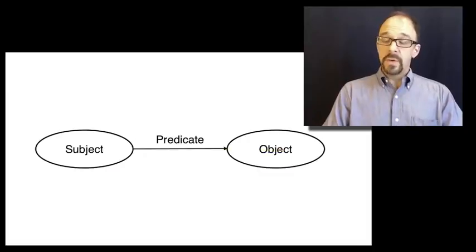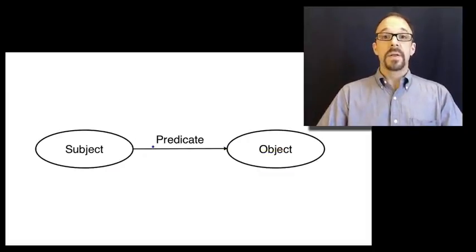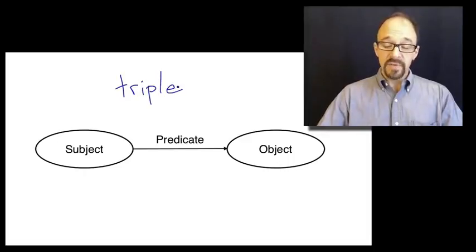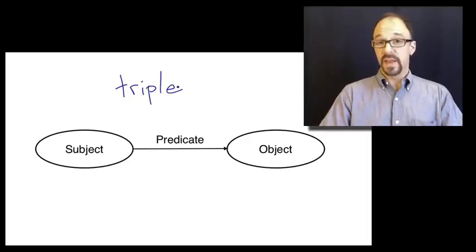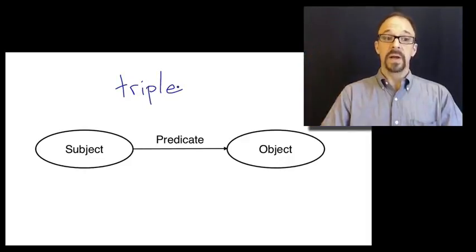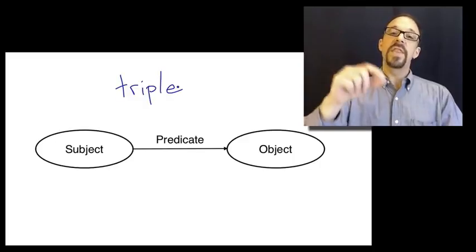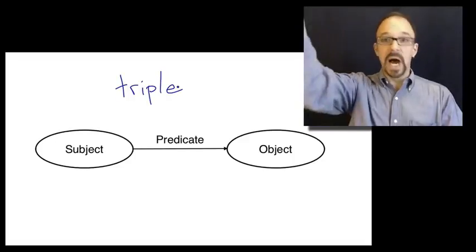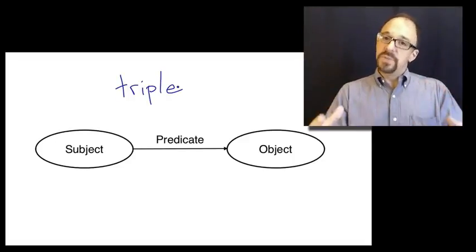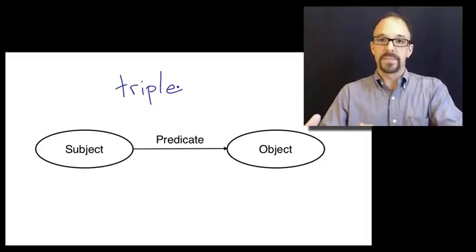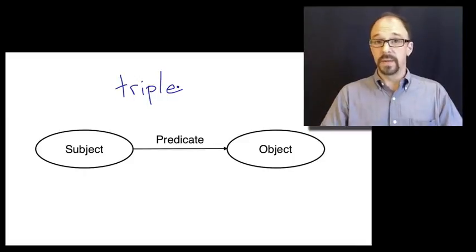In the language of RDF, that is called a triple, which, it should be fairly obvious, is made up of three things: a subject, an object, and a predicate. The object is the thing that you are making a statement about, for example, the sky. The subject is the characteristic of the object. Blue, for example.